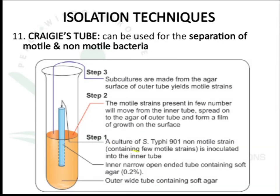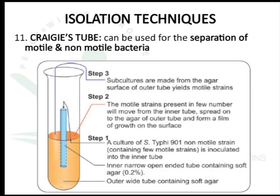The motile microorganisms can be separated from the surface of the wider tube and used for subculturing. This is mainly used to separate non-motile from motile Shigella or Salmonella typhi. The Salmonella typhi solution is inoculated into the narrow tube; after incubation, the motile microorganisms travel to the wider tube and can be subcultured from its surface.